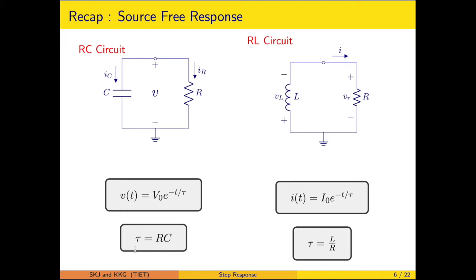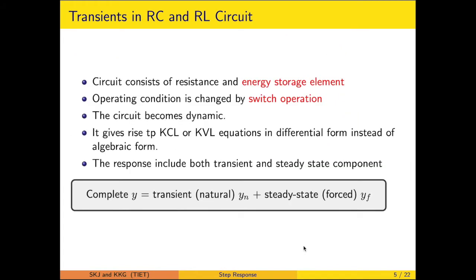The time constant τ depends on the circuit parameters: it is RC for capacitive circuits and L/R for inductive circuits. This time constant represents the physical characteristics of the system. The response has two components — transient and steady state. The transient (natural) response decays continuously and vanishes with time for a stable system, while the forced or steady state response is due to the external source.